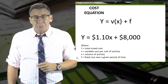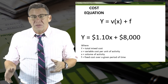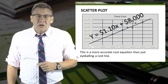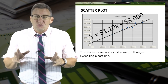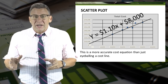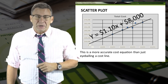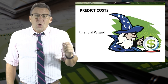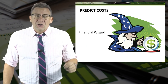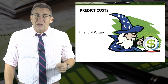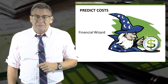With this information, we can predict costs at various levels of volume within the relevant range. Looking back at the scatter plot, we can now draw a more accurate line because we know the cost equation for this company. For example, what would the total cost be at 45,000 miles? The calculation results in a predicted cost of $57,500.